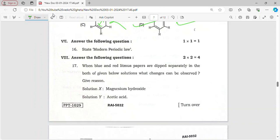Modern periodic law states that properties of elements are periodic functions of their atomic number.